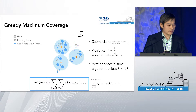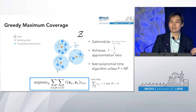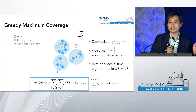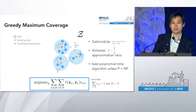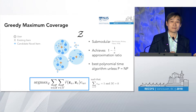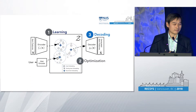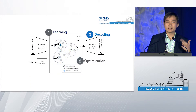The last step is really simple. We already have our latent representations, so we just need to decode them. We trained our decoder in the learning step, so we're done. That's it: one, two, three — learning, optimization, decoding.